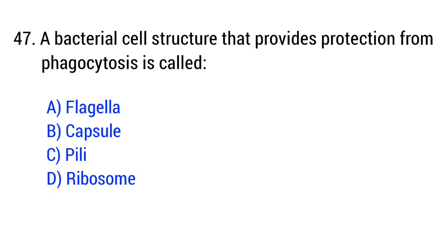Question number 47. A bacterial cell structure that provides protection from phagocytosis is called? The right answer is option B: Capsule.